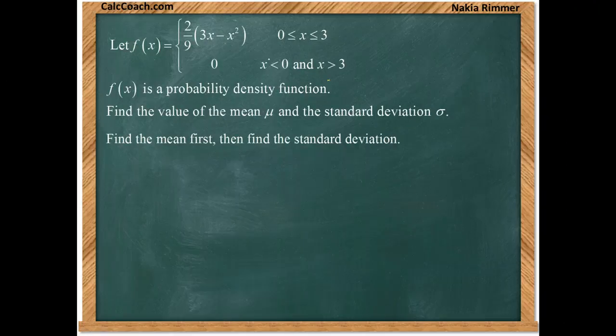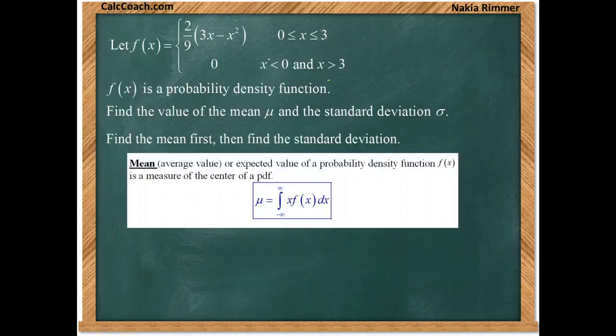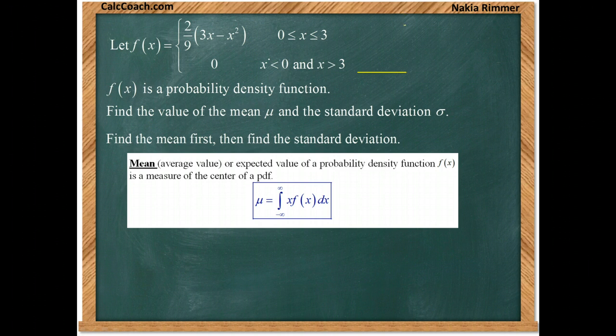The formula for finding the mean is to integrate the density function times x over the entire real line. But this function is zero, then it's the parabola that opens down, and then it's zero again. So when we're integrating over the entire real line we really can only focus our attention on 0 to 3.